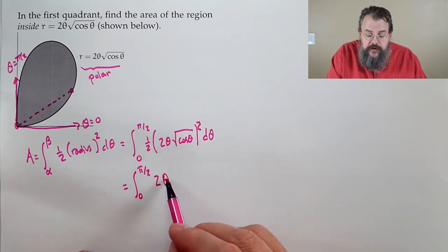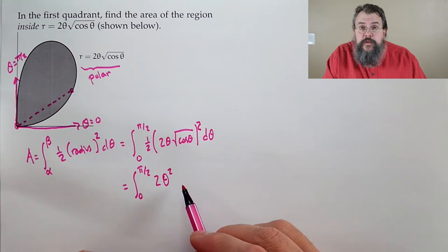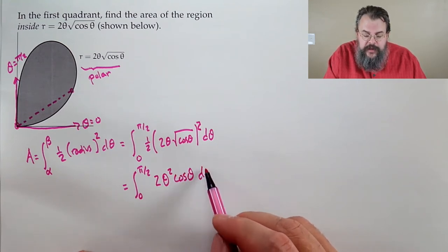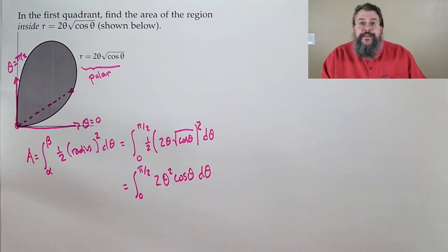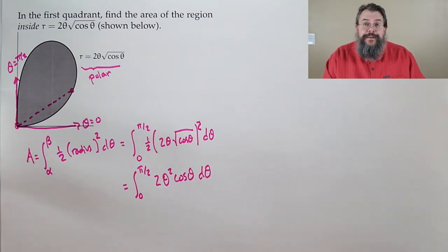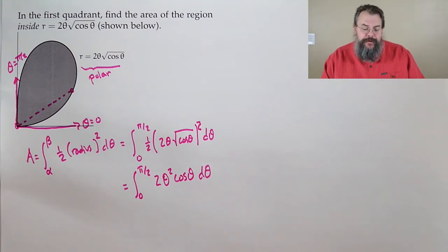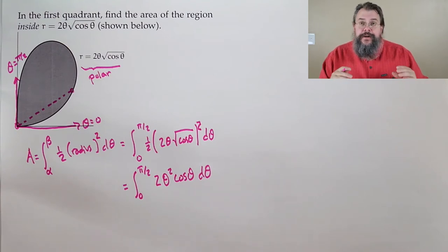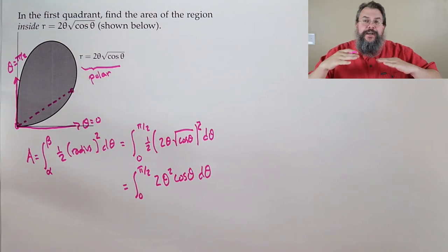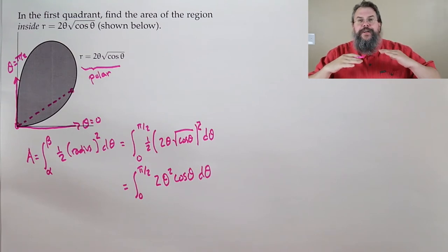Squaring and simplifying: 2 squared is 4 times a half gives 2, so we have the integral from 0 to π/2 of 2θ²·cos(θ) dθ. Now we see cosine and θ squared. Cosine doesn't really matter whether we integrate or differentiate, but θ squared — if we differentiate, it becomes simpler.